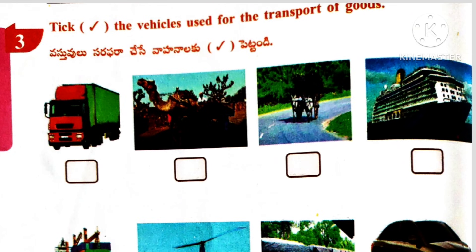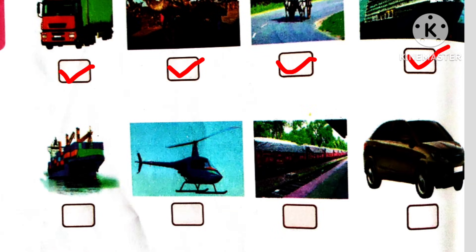Roman number 3: Tick the vehicles used for transport of goods. Lorry, camel, bullock cart, ship, boat, and goods wagons — these vehicles are used for the transport of goods. The remaining two are not used for the transport of goods.